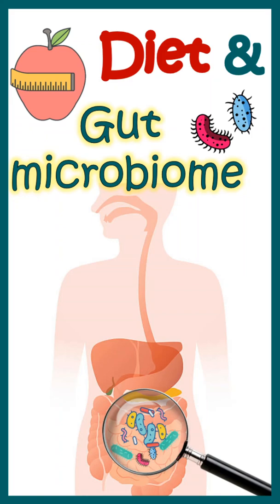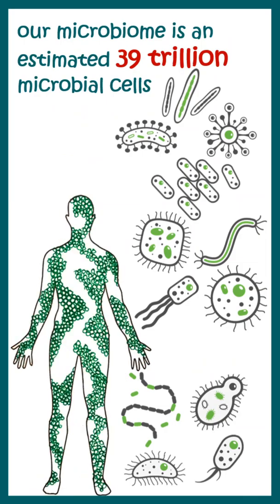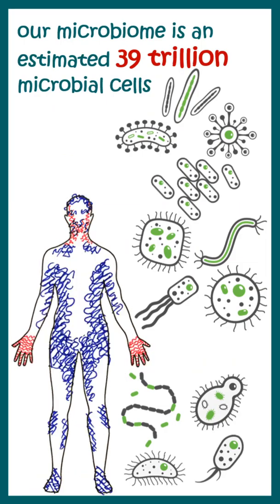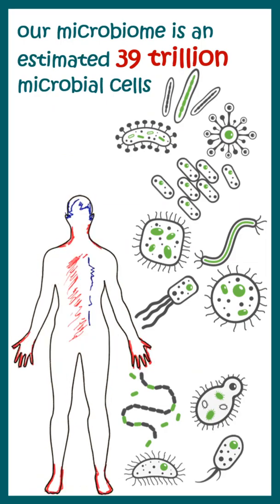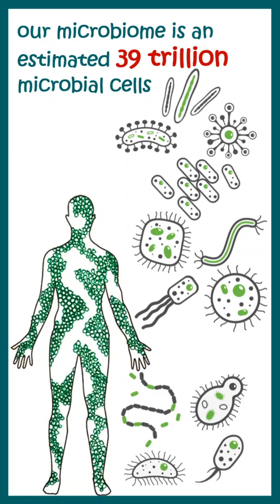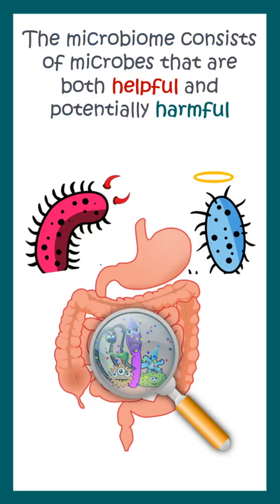Today, I'll talk about diet and gut microbiome. Our gut microbiome is estimated at 39 trillion microbial cells. That means we have more bacterial cells in our body than our own cells. This microbiome consists of two types of bacteria — some are helpful and some are harmful.